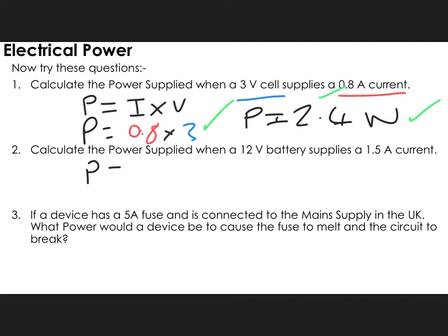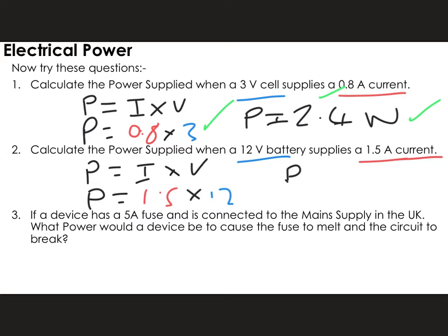The next question works in the same way — power is equal to current times potential difference. It says calculate the power supplied when a 12 volt battery supplies a 1.5 amp current. So 1.5 amps is my current and 12 volts is my battery. Power is equal to 1.5 multiplied by 12, which gives a power of 18 watts. You get one mark for substituting in your work, one mark for the answer, and one mark for the unit.